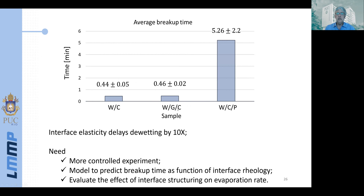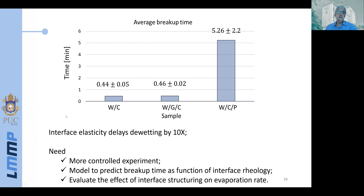We compared different systems: water with surfactant (CTAB) took only 0.44 minutes to dewet. Water with glycerin and surfactant — where glycerin increased viscosity to match the next system — took longer. The third system was water with glycerin, surfactant, and a polymer surfactant: this has the same viscosity and same isotropic interfacial tension as the glycerin system, but a much stronger elastic interfacial behavior (the same system shown at the beginning of the talk). This elastic interface system took more than 5 minutes to dewet — a delay by a factor of more than 10 — clearly demonstrating that interface elasticity delays dewetting.